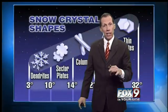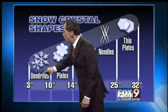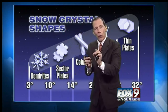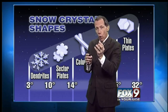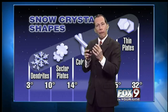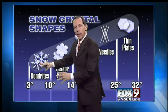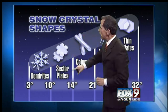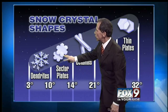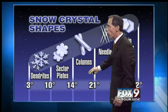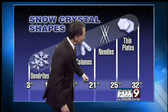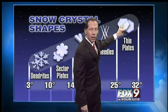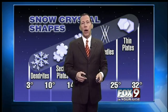Let's look at the possibilities of what will fall — the snow crystal shapes. These are the dendrites: if the temperature is between three and ten degrees, a supercooled water droplet — water in liquid form below freezing — forms and produces these dendrites. Between ten and fourteen degrees you get sector plates; between fourteen and twenty-one, columns; between twenty-one and twenty-five, little needles of ice crystals; and when it's warmer, you get thin platelets. Sometimes you get a mixture of both.